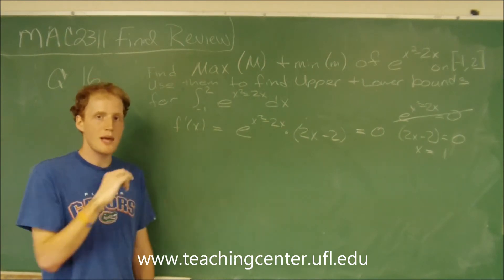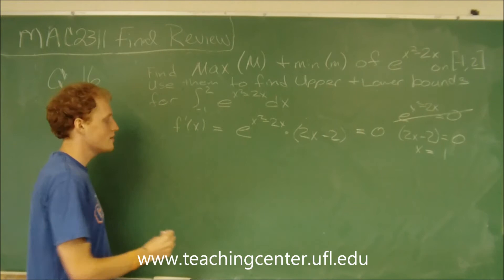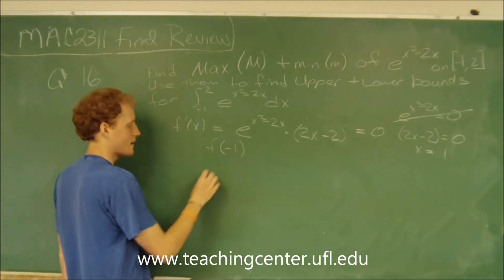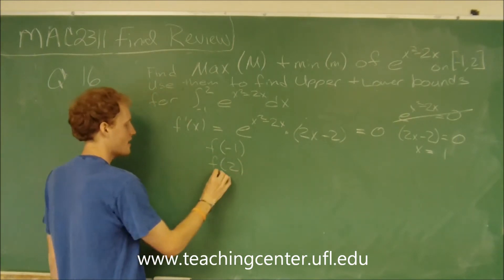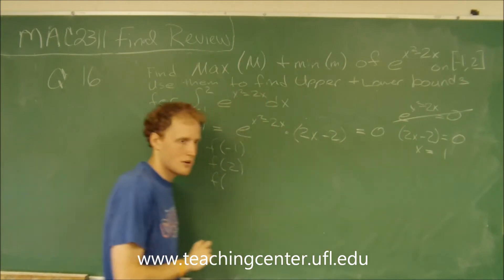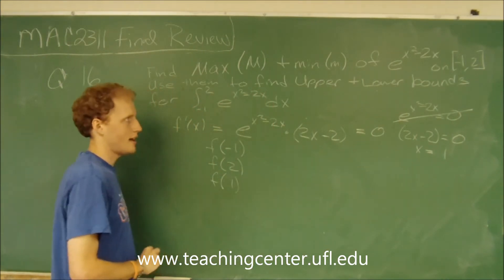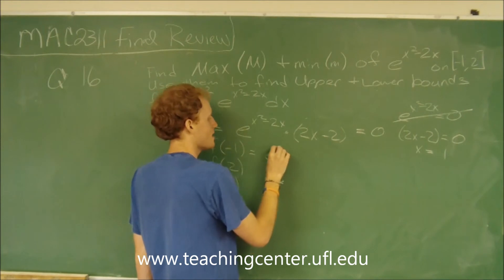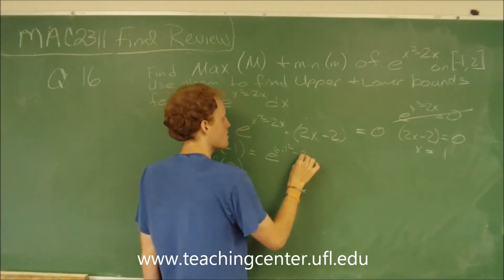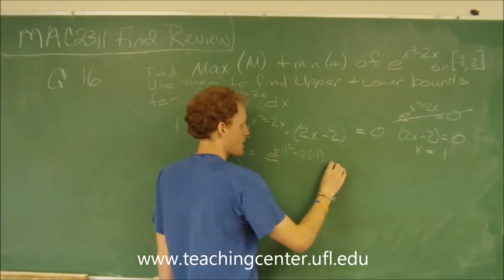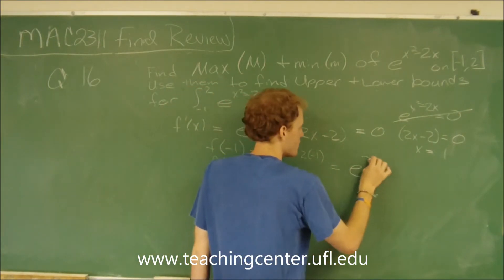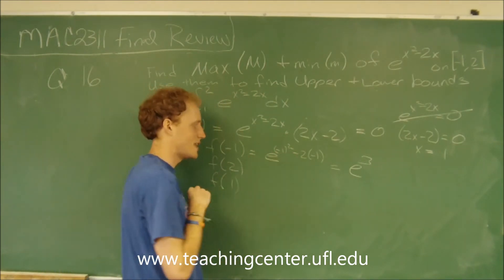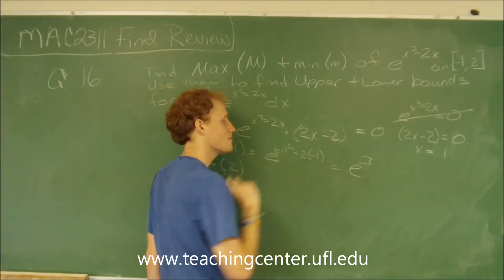To find maximum and minimum values on an interval, we need to investigate the function value at the endpoints, f of negative 1 and f of 2, and then the function value at our critical number x equals 1. Plugging negative 1 in, we get e to the negative 1 squared minus 2 times negative 1. Negative 1 squared is 1, minus 2 times negative 1 is plus 2, so 1 plus 2 gives us e cubed.